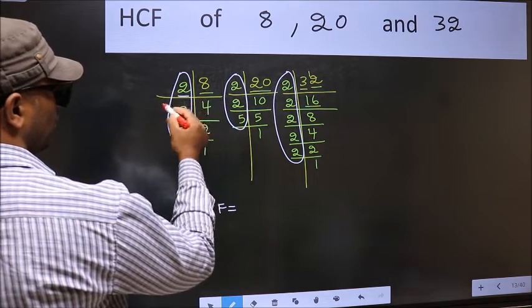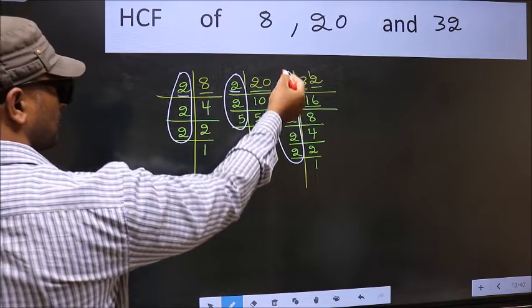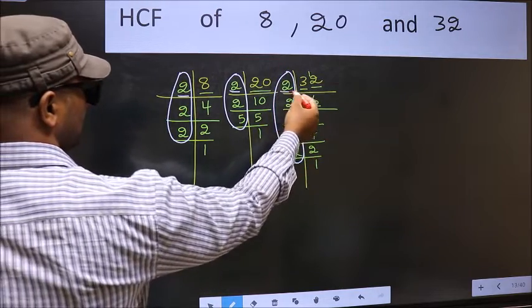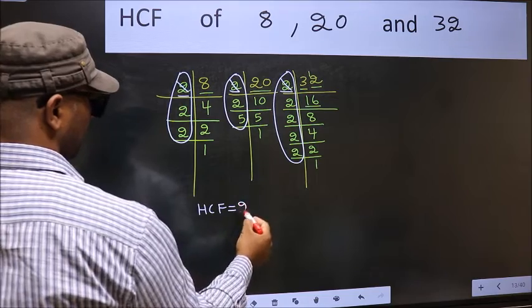Starting with the number 2. Do we have 2 here? Yes. Go to the next place. Do we have 2 here? Yes. So cut 2 right here.